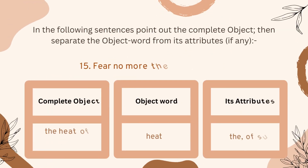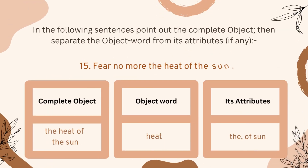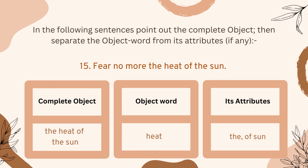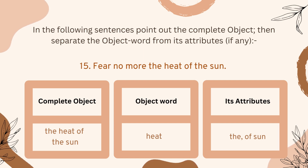Number fifteen: 'Fear no more the heat of the sun.' 'The heat of the sun' — these five words — are used as the complete object. 'Heat' is the object word, and 'the,' 'of the sun' are the attributes.